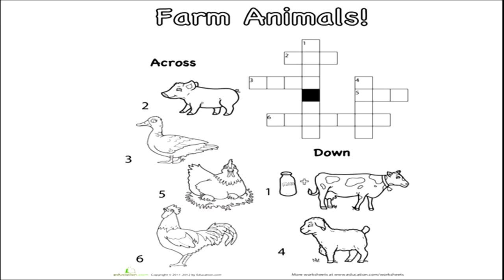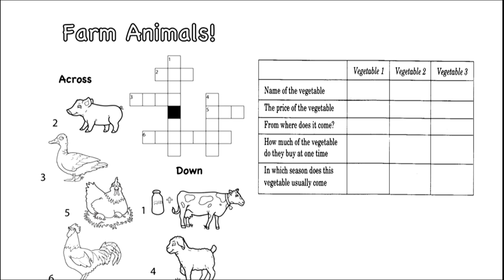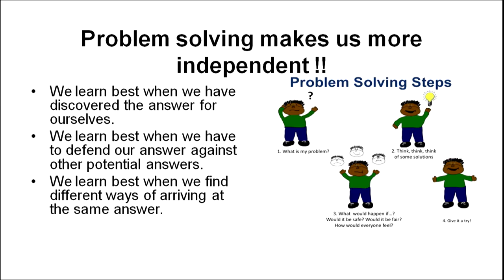Problem solving in a simple manner can also be given through a crossword puzzle, which can be given to Grade 1 students. You can also do similar activities with vegetables — what is dissolvable and what is not. In conclusion, we learn best when we discover the answer for ourselves, when we answer against other potential answers, and when we find different ways of arriving at the same answer. Thank you so much — I hope you have enjoyed the session.